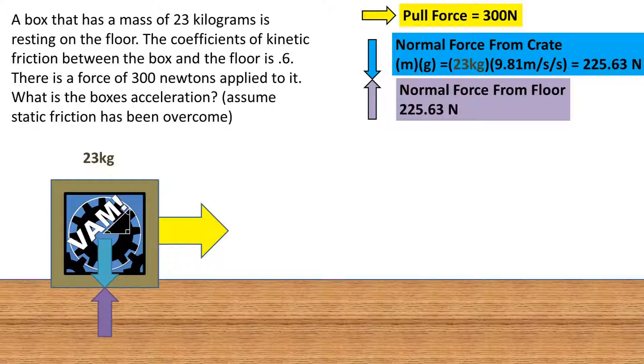In order for the crate not to fall through the floor, there must be an equal and opposite force, which is the normal force from the floor. This is marked with a purple arrow and is the same as the normal force from the box.